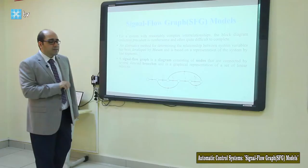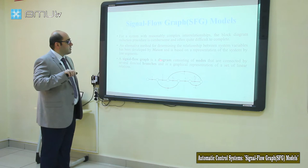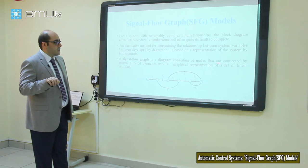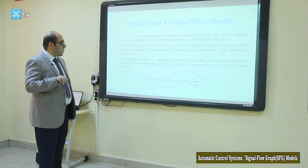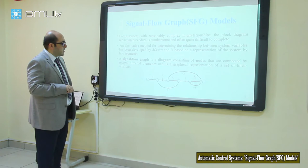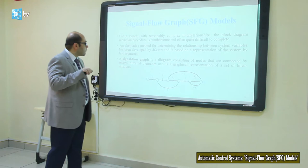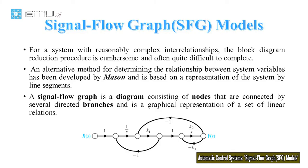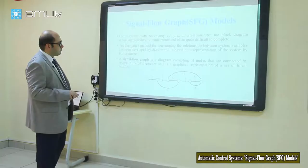What is the signal flow graph? A signal flow graph is a diagram consisting of nodes that are connected by several directed branches. These are our nodes. It is a graphical representation of a set of linear relations.